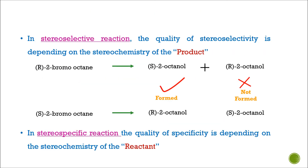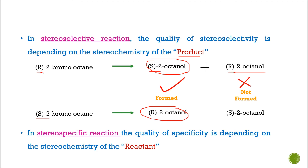In a stereoselective reaction, the quality of stereoselectivity depends on the stereochemistry of the product. Here, the R form produces only S-2-octanol, while the S form produces only R-octanol. This reaction is stereoselective and stereospecific as well, because in a stereospecific reaction the quality of stereospecificity depends on the stereochemistry of the reactant. So if we take the R form, that gives only the S form of 2-octanol, while the S form gives only R-octanol.